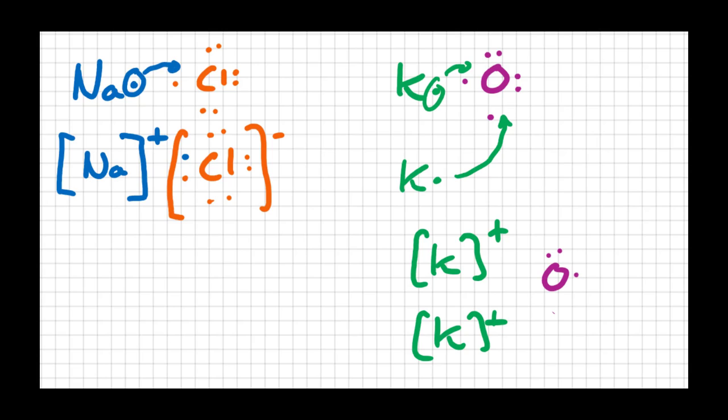My oxygen, which started out with six valence electrons, has picked one up from this potassium and one up from this potassium, and now as a result has a two negative charge.